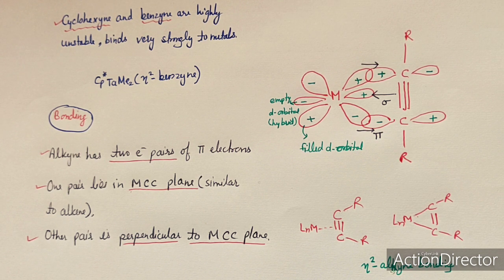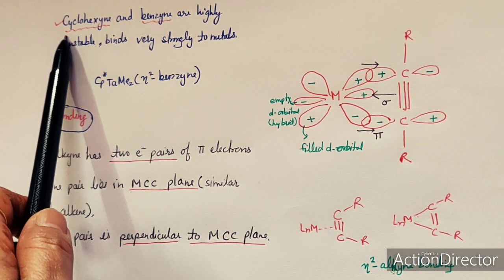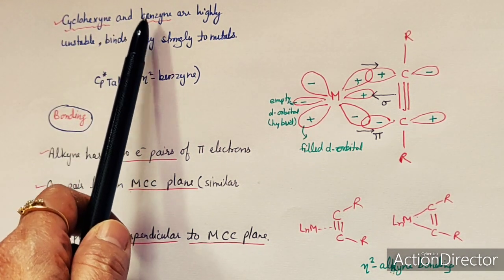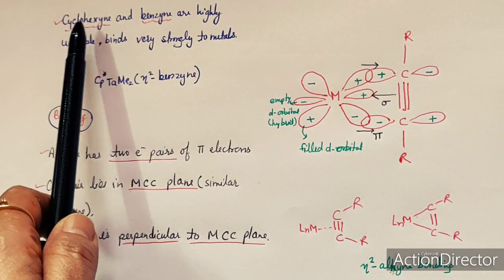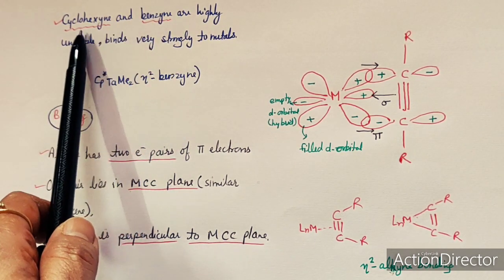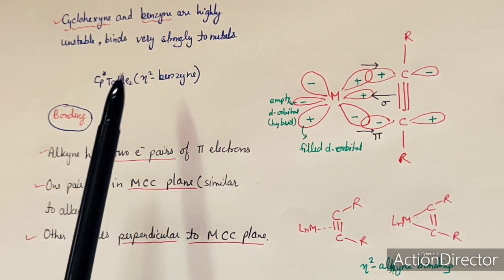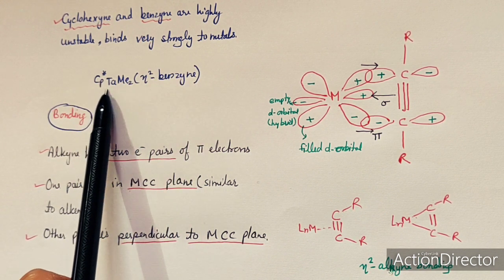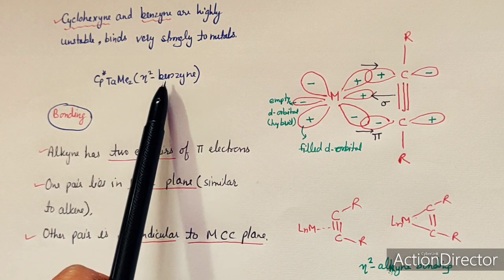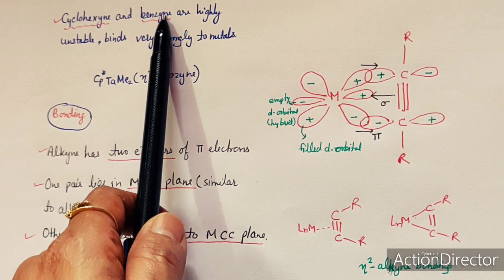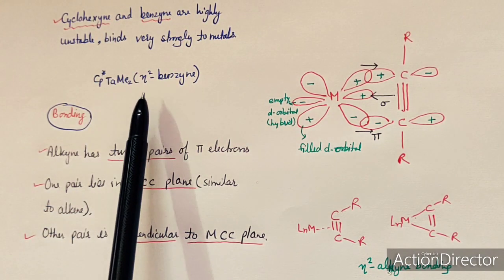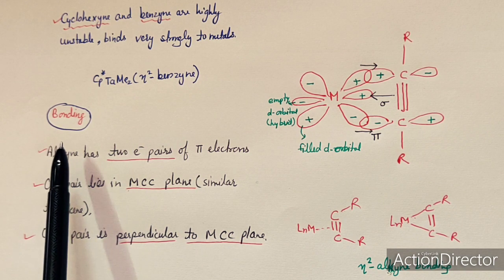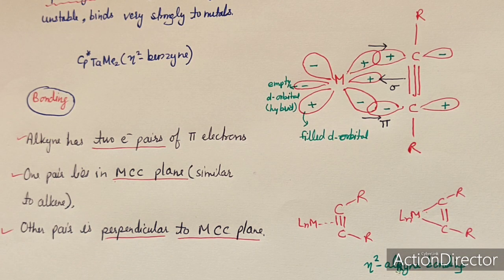Before discussing bonding in detail, we note that some unstable ligands like cyclohexyne and benzyne can be stabilized through the formation of organometallic compounds. The formation of metal alkyne complexes can stabilize these otherwise very unstable alkynes through metal-alkyne ligand coordination.